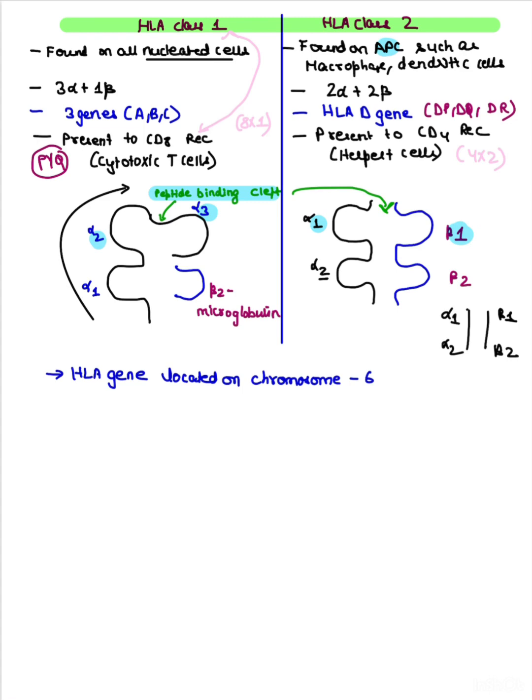This is a PYQ: class 1 presents to CD8 and 2 to CD4. Now the next question that may be asked: what is the peptide binding cleft in class 1? Look at this guys, this is the peptide binding cleft present between alpha 2 and alpha 3.